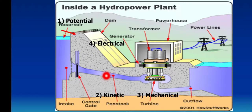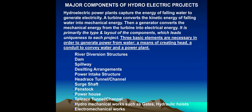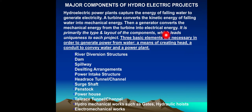Major components of hydroelectric projects: Hydroelectric power plants capture the energy of falling water to generate electricity. A turbine converts the energy of falling water into mechanical energy, then a generator converts the mechanical energy from the turbine into electrical energy. It is primarily the type and layout of the components which lends uniqueness to each project.